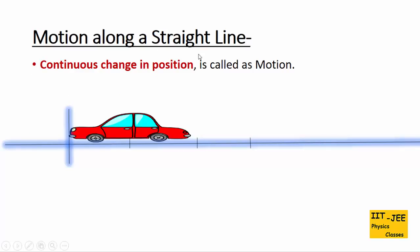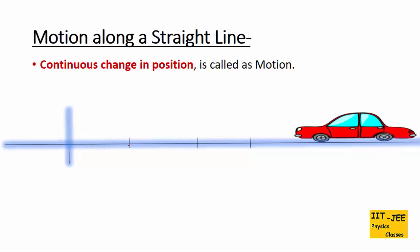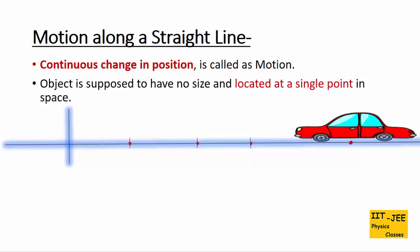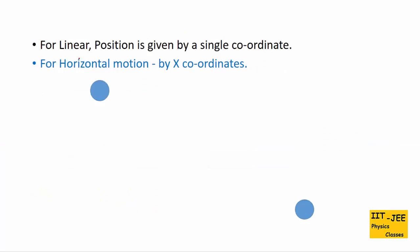What is motion along a straight line? Continuous change in position is called motion. For example, this car moves from left to right. Its position is continuously changing from one point to the next, and finally the car is at this point. So change in position shows the object is moving. Whenever we show an object in a graph, it is supposed to have no size and be located at a single point. These straight line motions are also called linear motion or rectilinear motion, and they are one-dimensional motions.